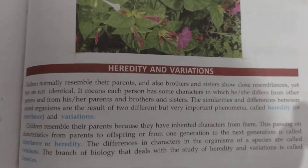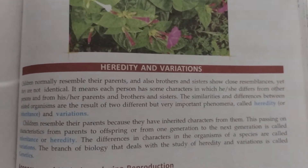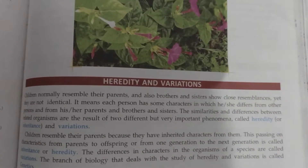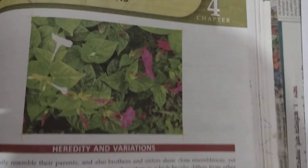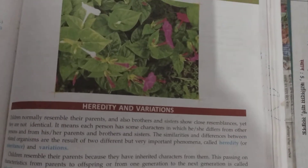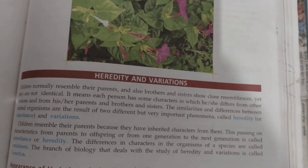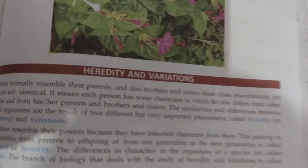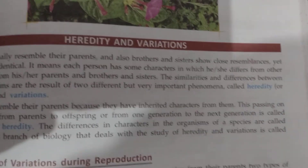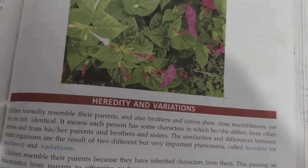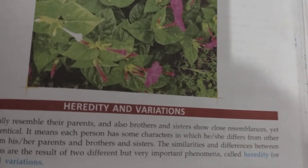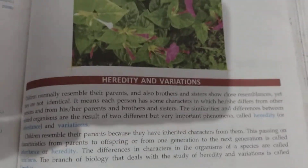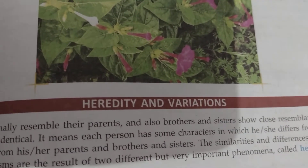If the genes are not affected, the character will not pass from one generation to another generation, and it will end in one generation. The genetic variation at the gene level is stable and passes from generation to generation, but somatic variation will stop.